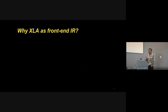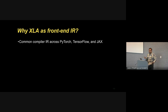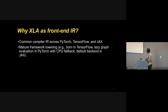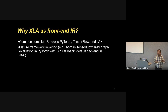Years back we made an early decision to choose XLA as the front-end IR for Neuron. The most important reason is it's the common compiler IR across PyTorch, TensorFlow, and JAX. Even back when JAX was in its early days, we recognized the opportunity to have XLA as a common denominator beneath all three popular frameworks. XLA was born with TensorFlow, then came to PyTorch via lazy graph evaluation with CPU fallback, and is also the default backend in JAX.